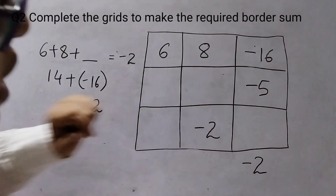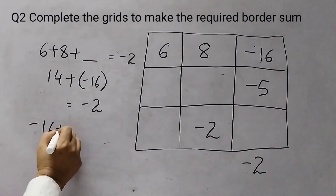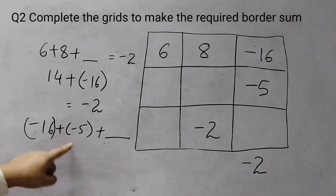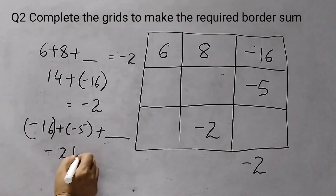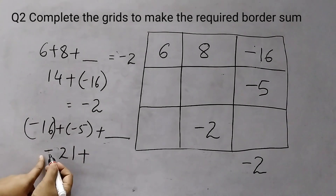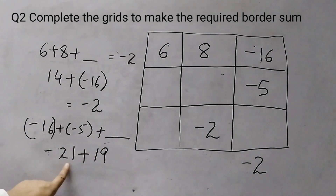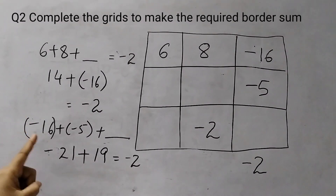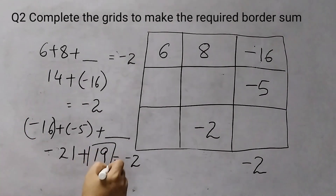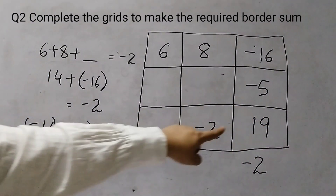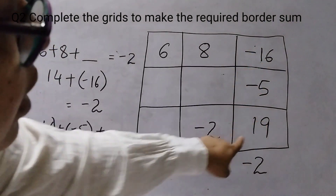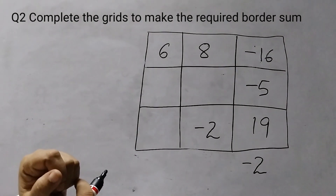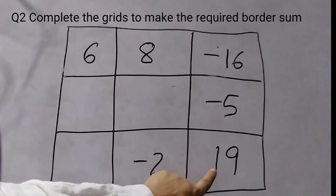Next we take minus 16, minus 5, and fill up the blank in the right column. Minus 16 plus minus 5 plus something should give minus 2. First, minus 16 plus minus 5 is minus 21. So minus 21 plus 19 gives minus 2 — to solve this grid you should be good with the addition of integers. The answer is 19. Now we'll take the bottom row, going in order: top row, right column, then bottom row.